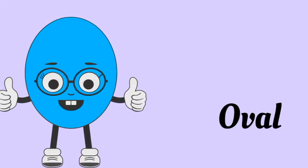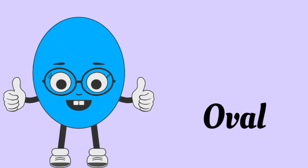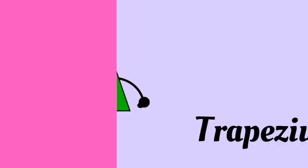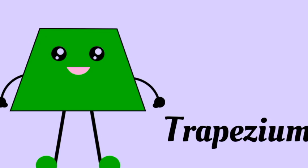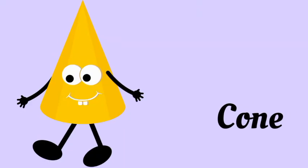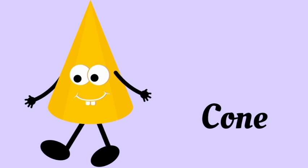Oval — oval has no sides and no angles. Trapezium — trapezium has four sides and four angles.